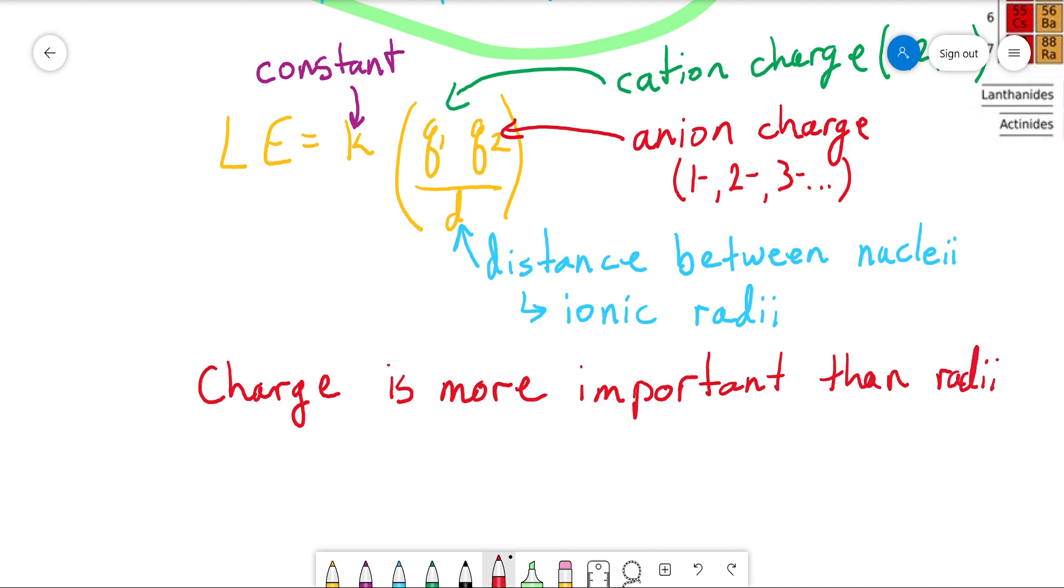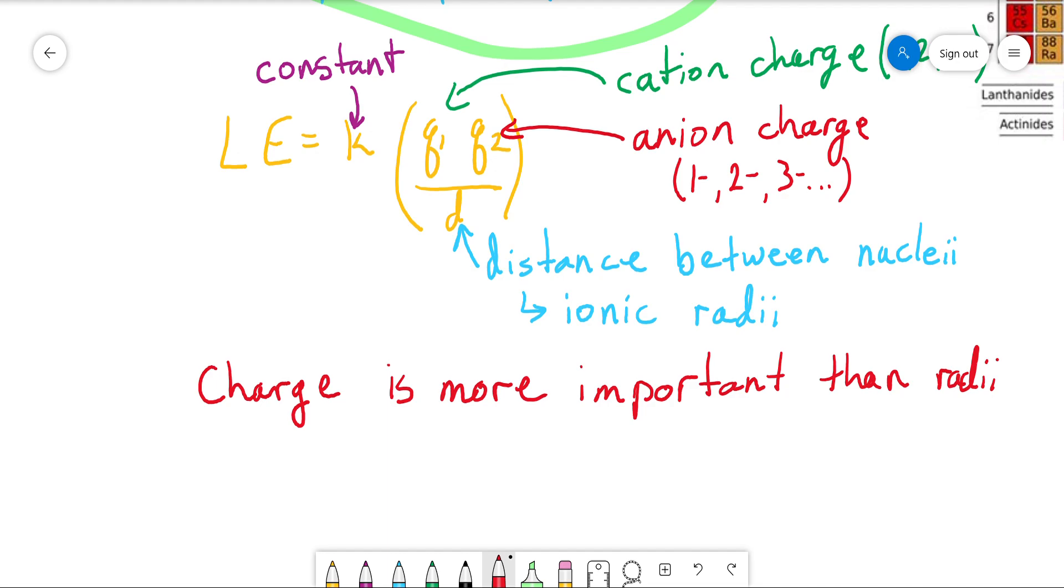What does that mean? Well, if you have two compounds, you're trying to decide, is the lattice energy higher in this one versus this one? The one with the biggest magnitude charges, like the plus two, minus two, that's always going to have a higher lattice energy than something with a plus one, minus one. So let me give you an example of that.